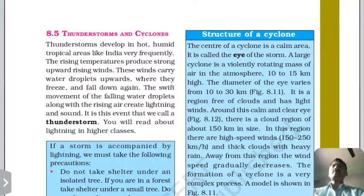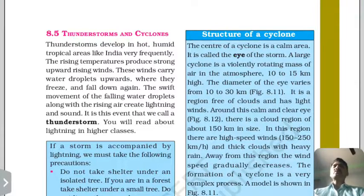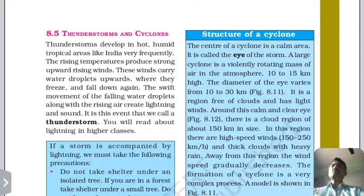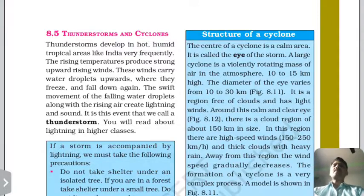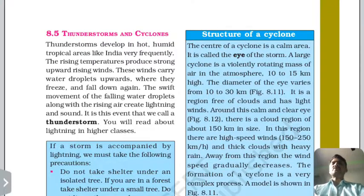A thunderstorm develops when the sun heats water, causing evaporation. Water droplets rise with air currents. As water moves downward and air moves upward, lightning and thunder are both created — this is what we call a thunderstorm.